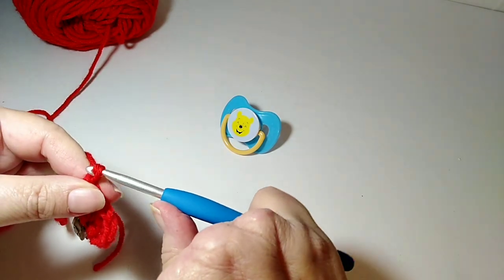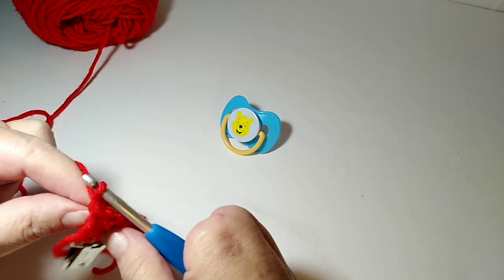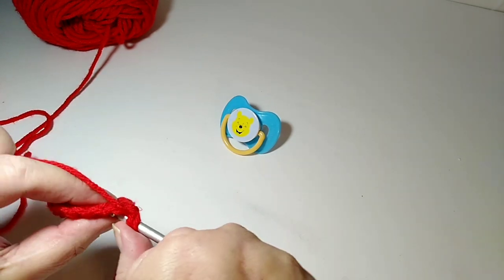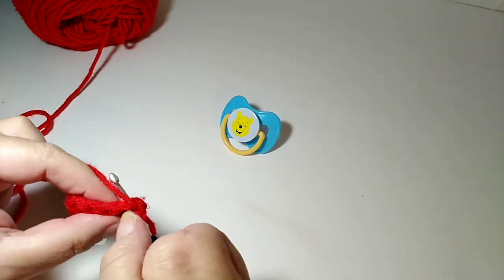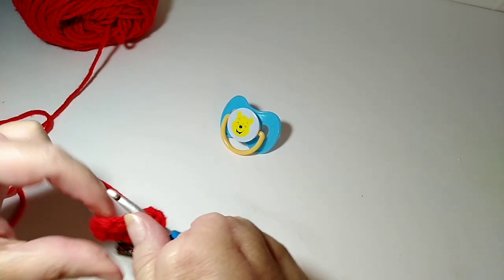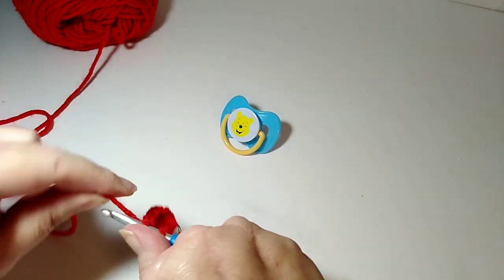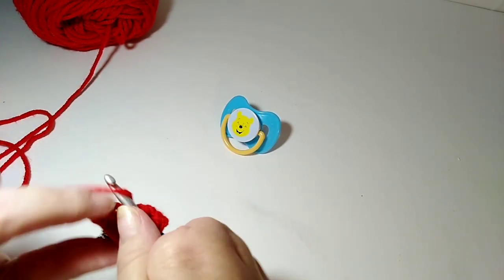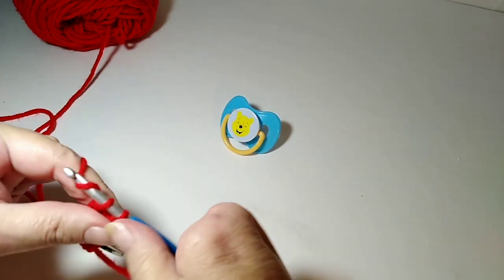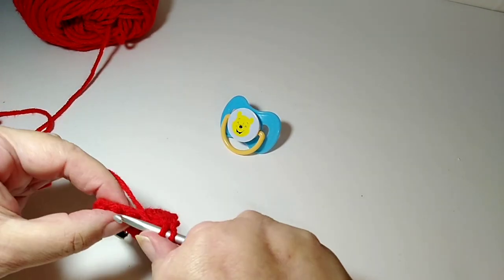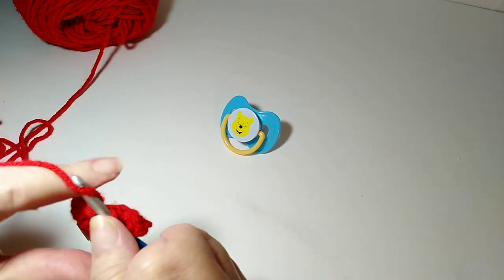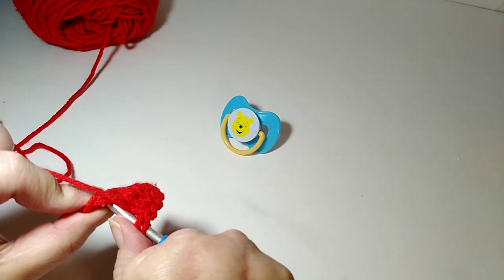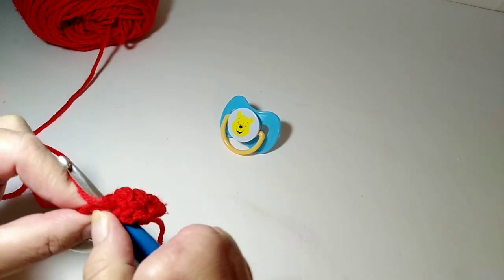And so each time, for each new row, I'm going to chain one, turn my work, and double crochet. And I'm always going to double crochet back into that very first stitch, so that I have four stitches to do here. So that's one, two, three, and four.